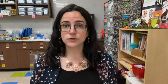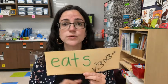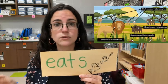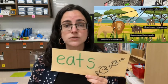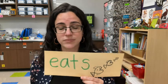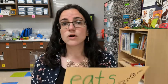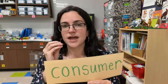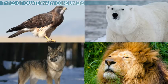We would also consider an autotroph to be a producer because they are producing their own food — they don't have to eat anything. On the other hand, heterotrophs are going to eat other living organisms in order to gain nutrients and turn it into energy. We would call a heterotroph also a consumer, because they are consuming something and turning that food into energy.